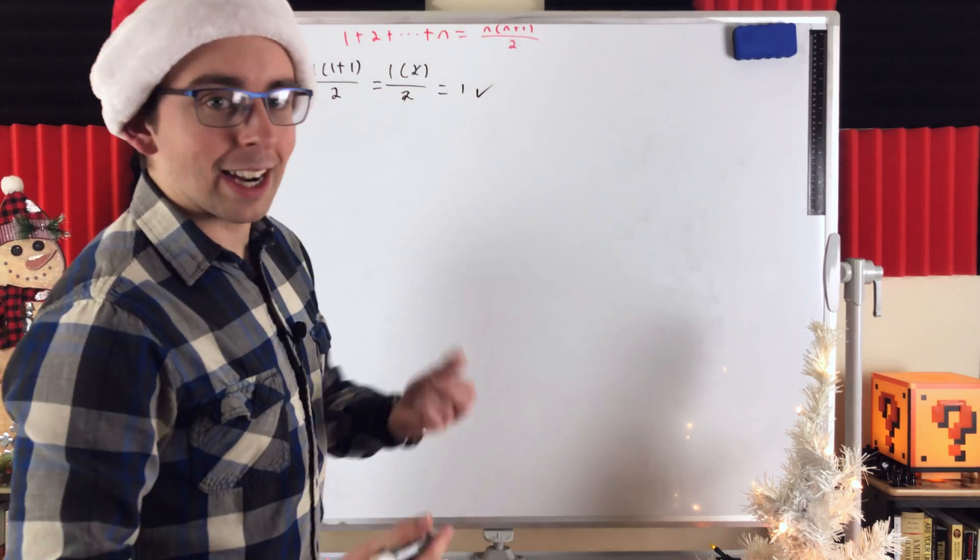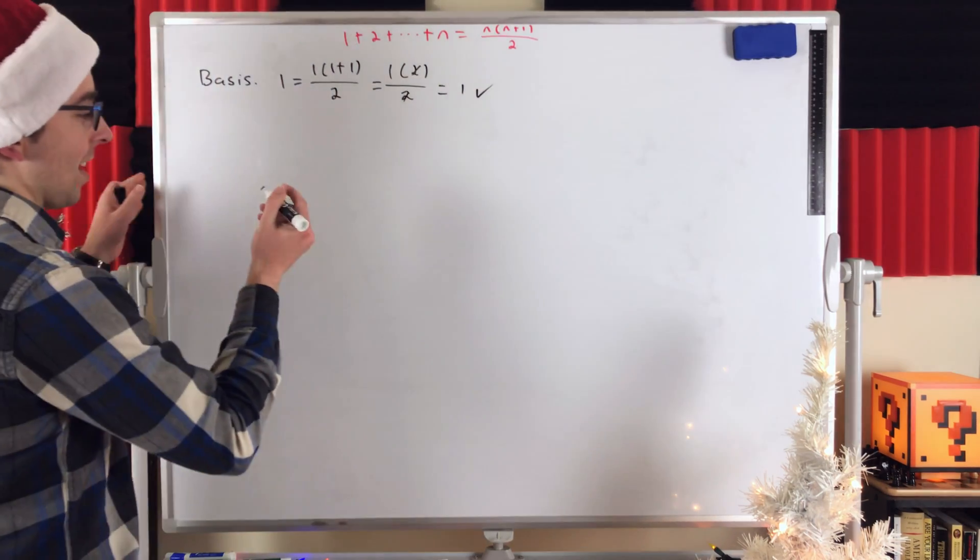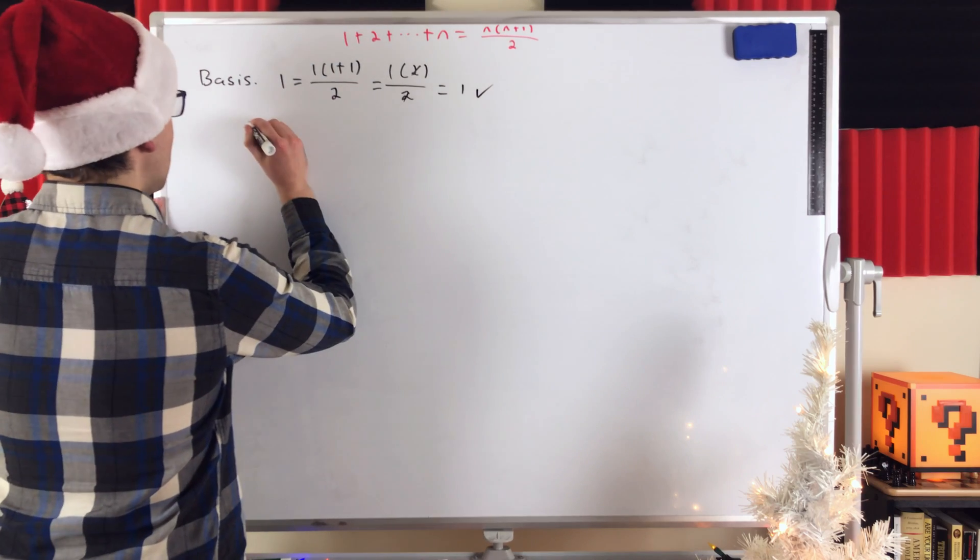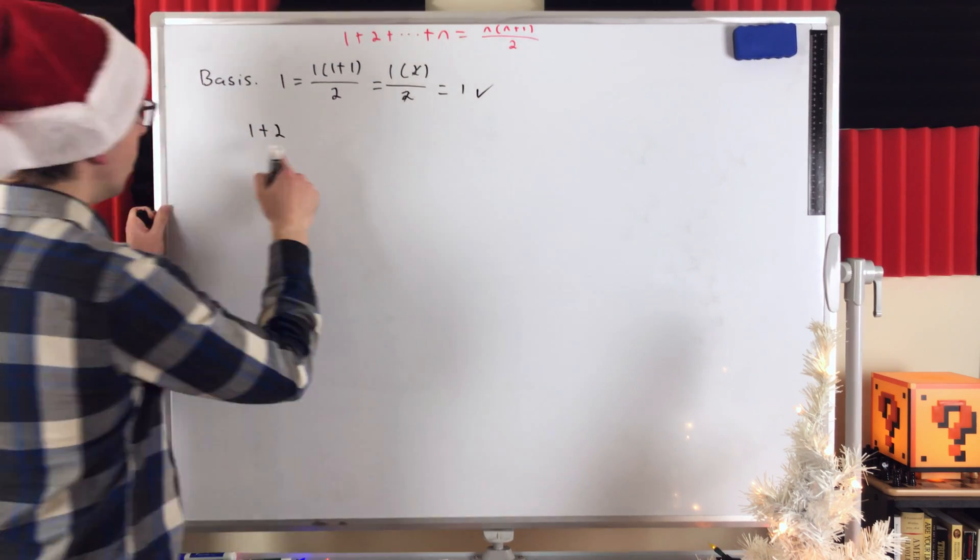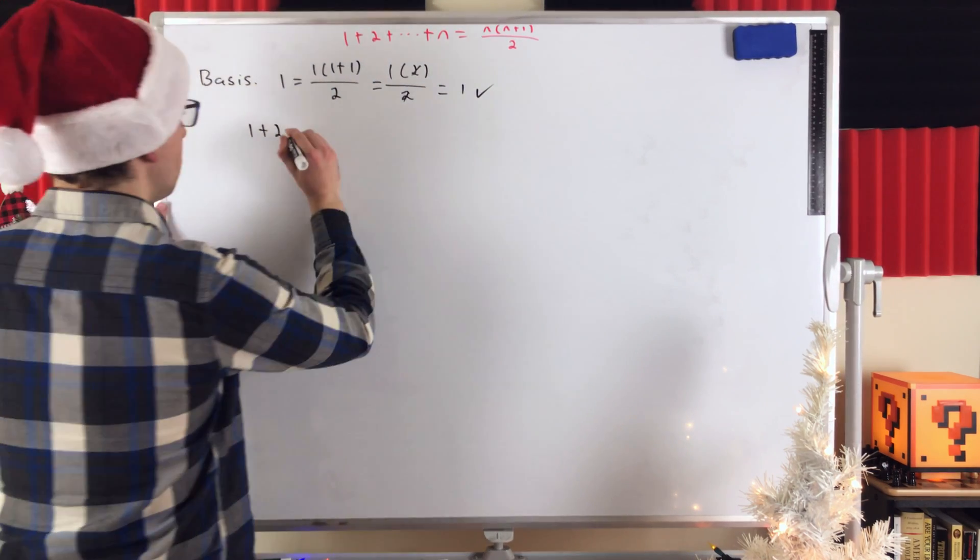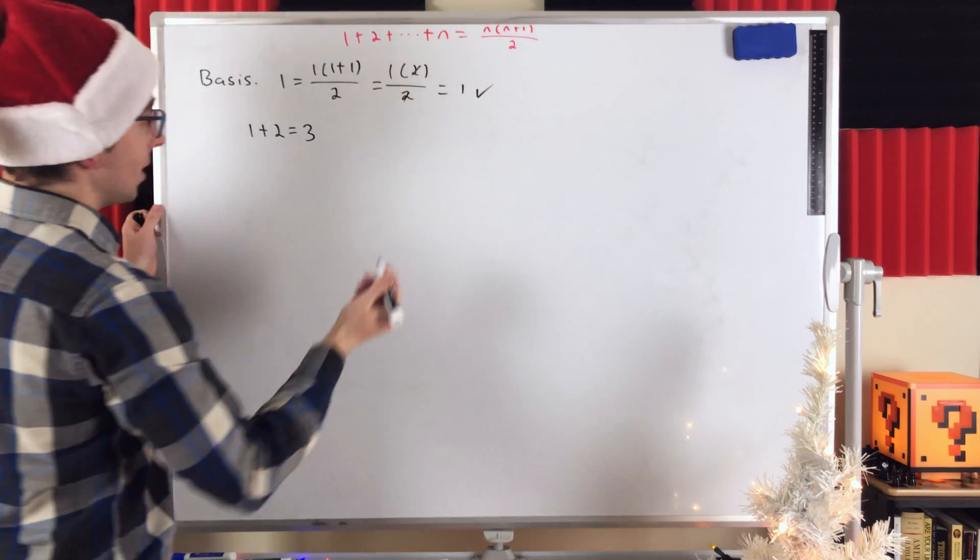Just for fun, we could check n equals 2 as well. Let's just check that. It's not necessary for the proof, but let's just do it because it's fun. 1 plus 2, the sum of the first two counting numbers. Clearly, that's equal to 3.